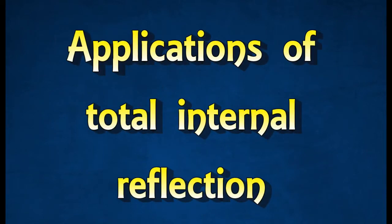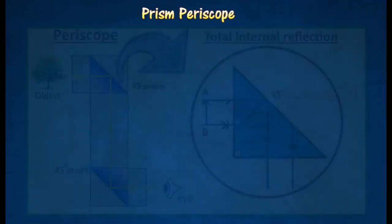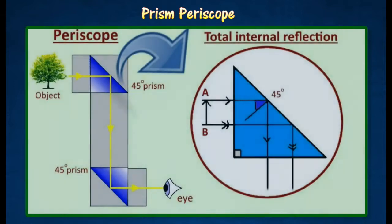Applications of Total Internal Reflection. A periscope can be used to view objects behind obstacles. The construction of the periscope is based on the effects of a prism on rays of light. The periscope is built using two right-angle prisms of crown glass.